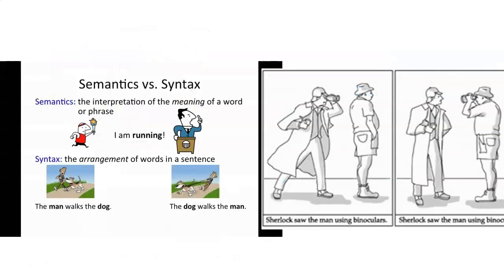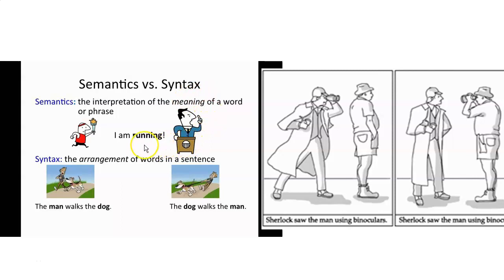Now, semantics versus syntax. Semantics is the meaning. For example, the phrase 'I am running' — if you look at one image, it's someone running a marathon. But if you see another image, it's someone who is running to be president or running to be governor. It's still the same word, but in each sentence it means something different. The semantics have changed.